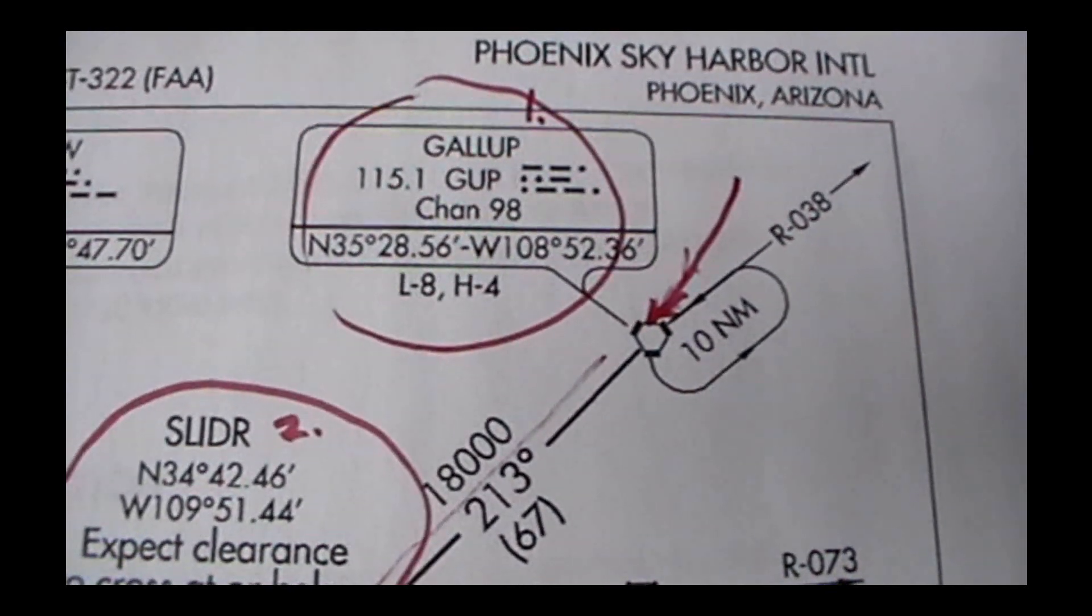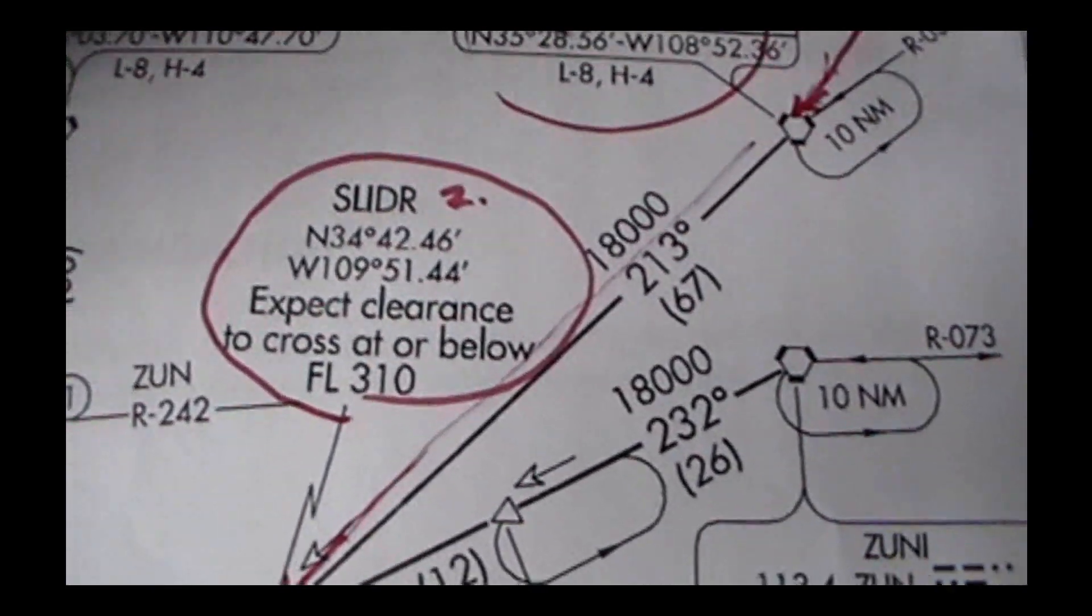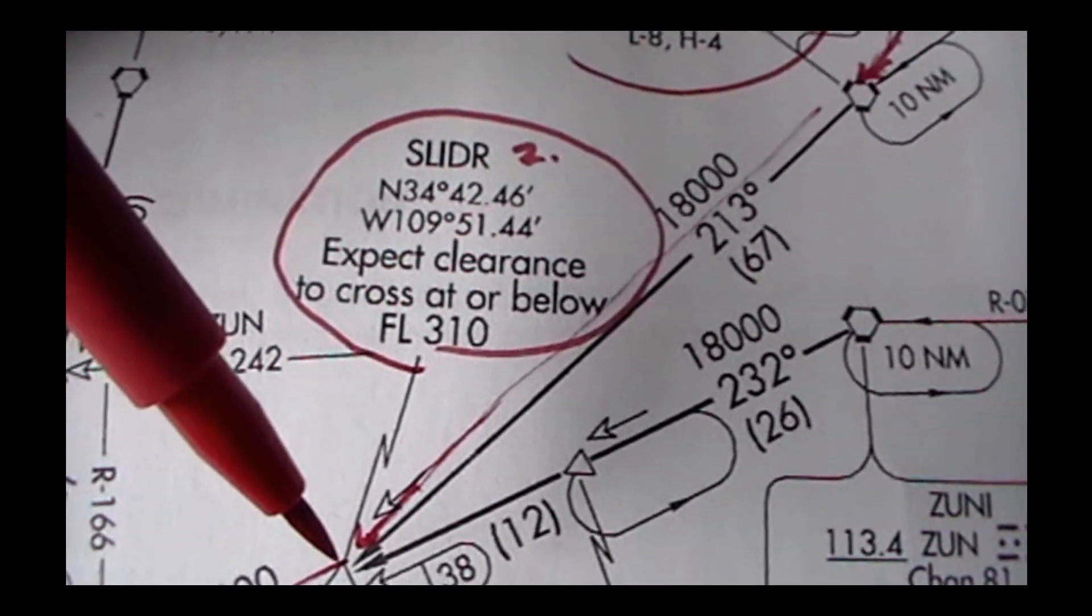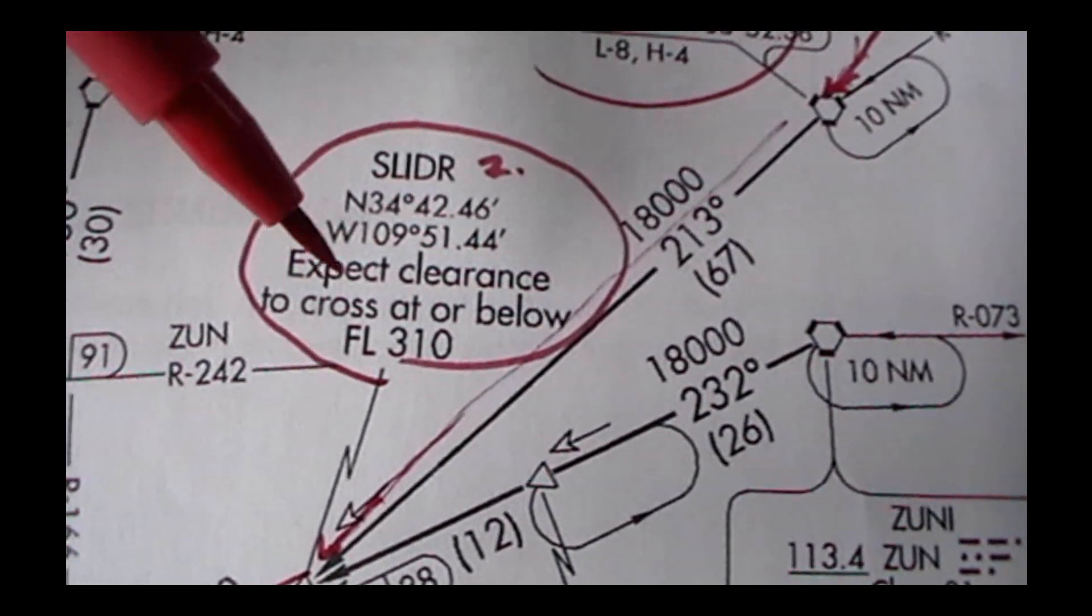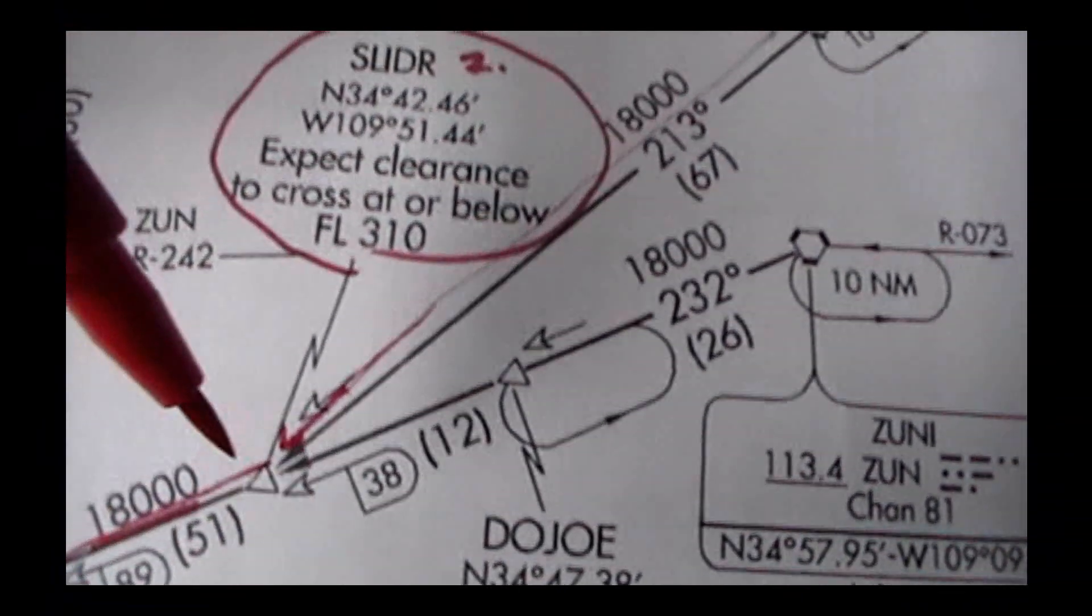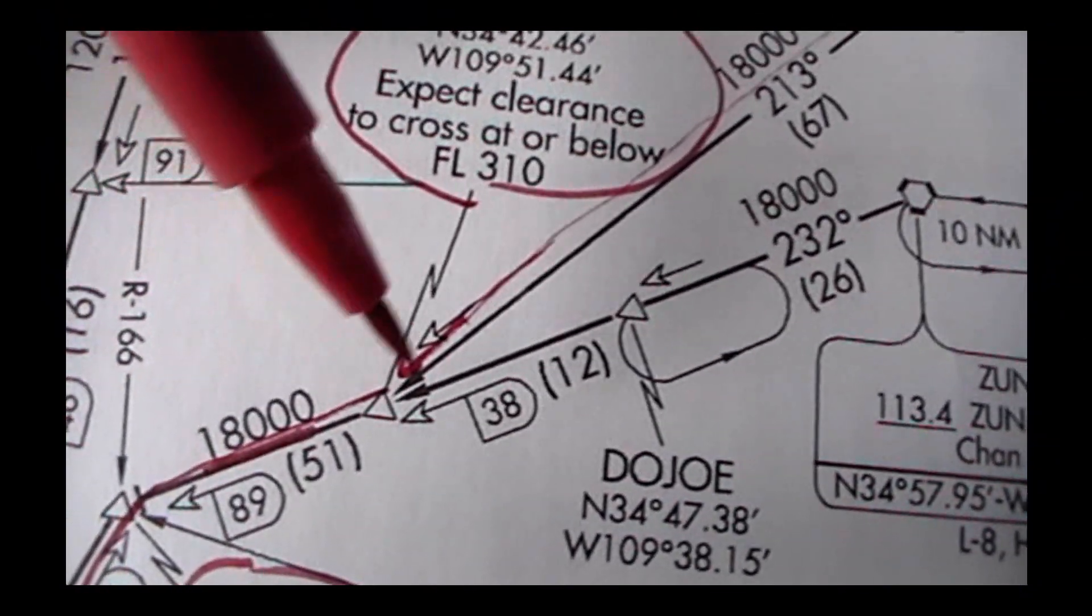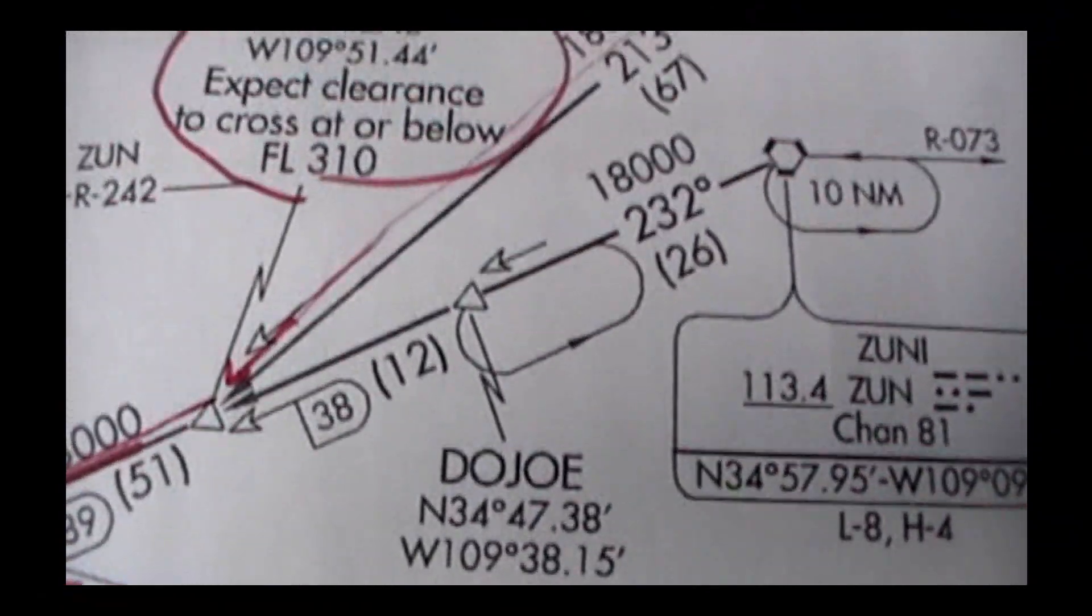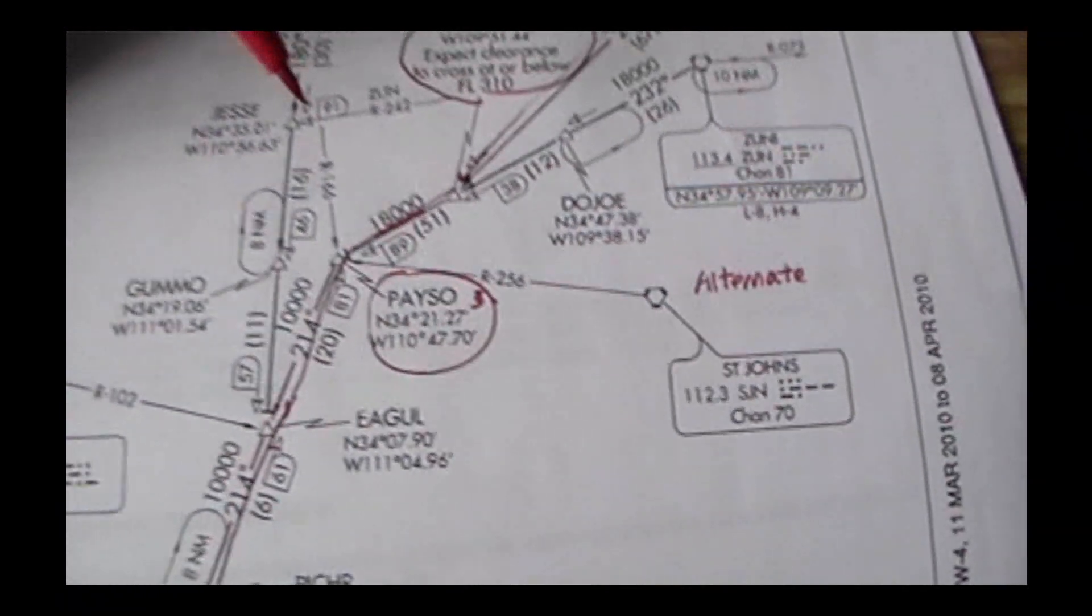Now, air traffic control may give you a different altitude, but that's just what the chart reads anyway. The next waypoint on here is SLIDR and the chart says expect clearance to cross at or below flight level 310. So air traffic control would have to give you clearance to fly along this route because it's probably very busy. So somewhere along here, there's more to the plan here.